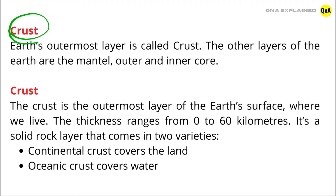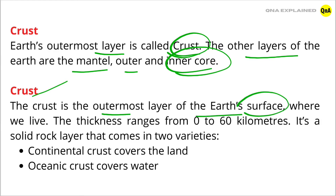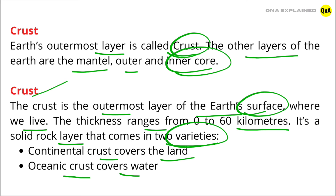So let's see what is crust. Earth's outermost layer is called crust. The other layers of the earth are the mantle, outer and inner core. The crust is the outermost layer of the earth's surface where we live. The thickness ranges from 0 to 60 kilometers. It's a solid rock layer that comes in two varieties: continental crust covers the land, and oceanic crust covers the water.